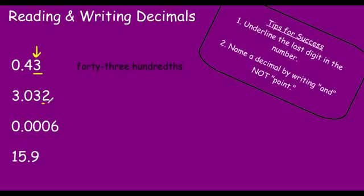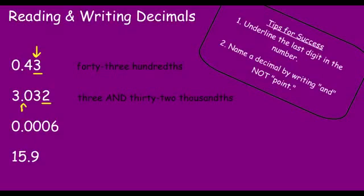If we look at this next number, we have three and thirty-two thousandths. Notice that when we come to that decimal, I say "and." So we would call it three and thirty-two thousandths. When you are formally reading or writing decimals, you don't say "point" anymore — you just say "and" when there is a decimal point. Notice that the two is in the thousandths place, which is why we say it is three and thirty-two thousandths.